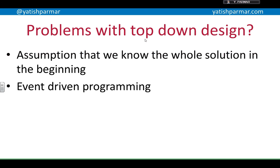Problems with top-down design include the assumption that we know the whole solution at the beginning. This is linked to issues with hierarchical approaches like the waterfall method — analysis, requirements, design, and so on — which doesn't reflect how things work in the real world, where plans, ideas, and markets change. Event-driven programming is another paradigm that doesn't work well with top-down design, because you're not breaking down functions but thinking about what actions occur when a particular event is triggered.